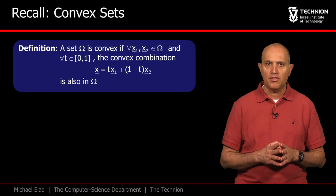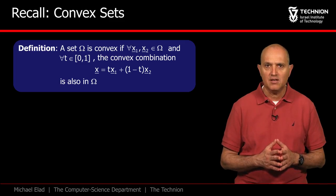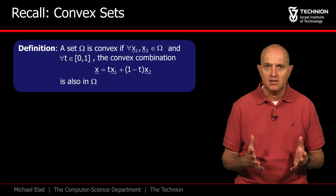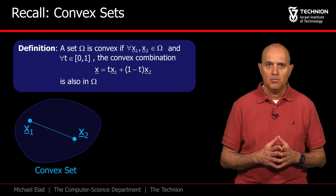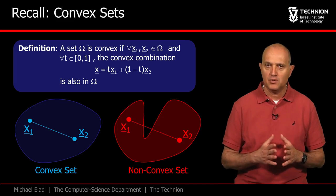We start our discussion with convex sets. A set omega is set to be convex if for every pair of points in it, the line connecting them is also contained in the set. We see here two examples that illustrate this.